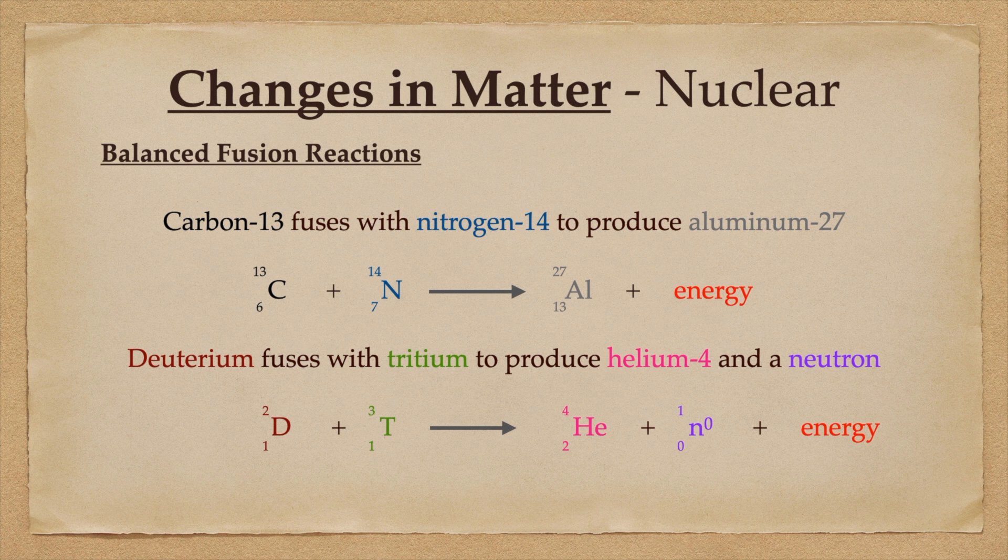Deuterium, a form of hydrogen, fused with tritium, also a form of hydrogen, to produce helium-4 and a fast neutron. This is one of the processes that we have used in fusion bombs.